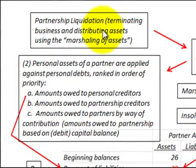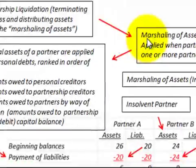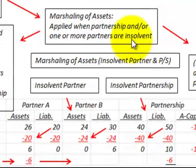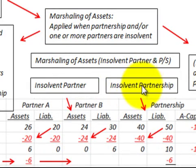Here we're going to look at a partnership liquidation where the partnership is terminating the business and distributing its assets using the marshalling of assets concept. The marshalling of assets is applied when a partnership and/or one of the partners is insolvent. For our example, we're going to have an insolvent partner and an insolvent partnership.